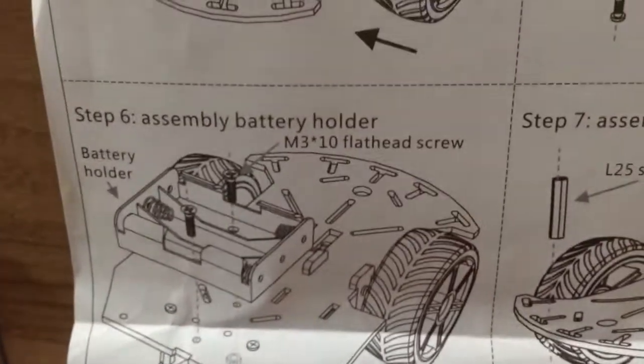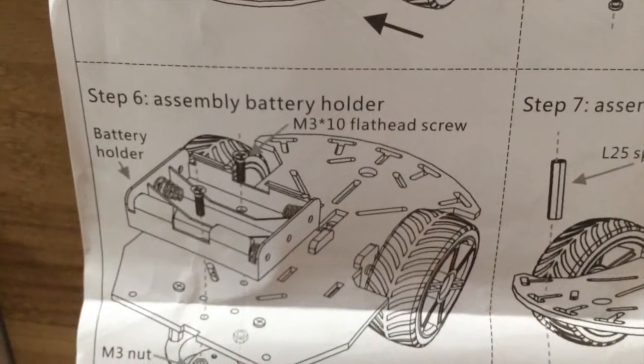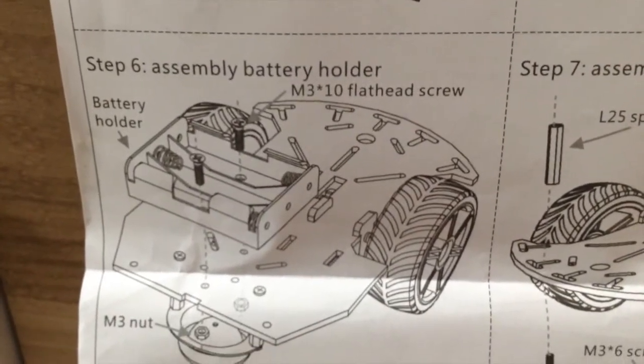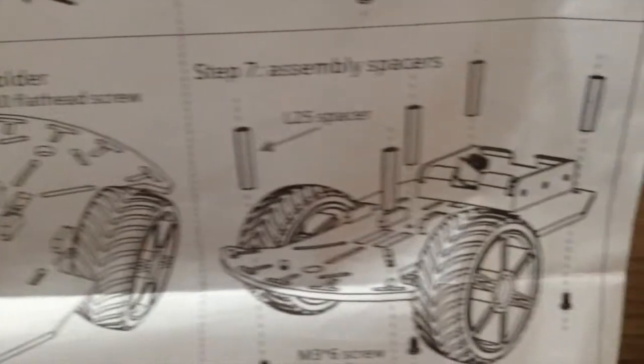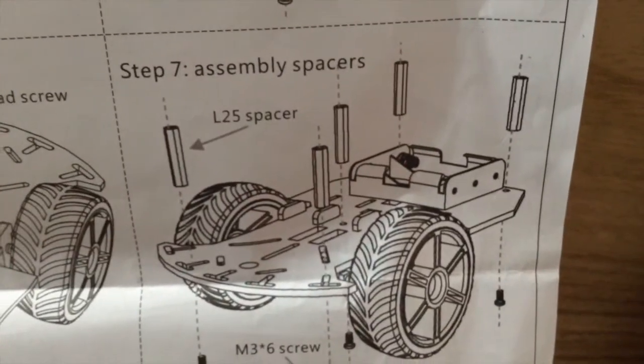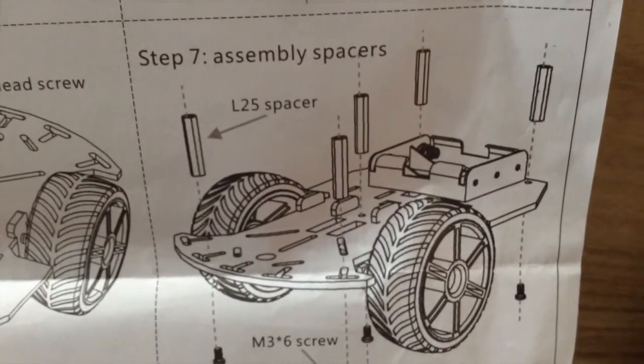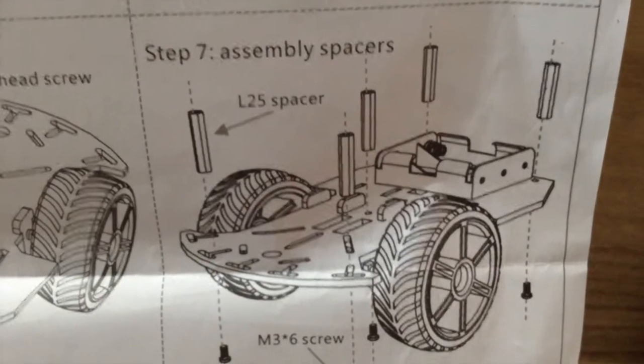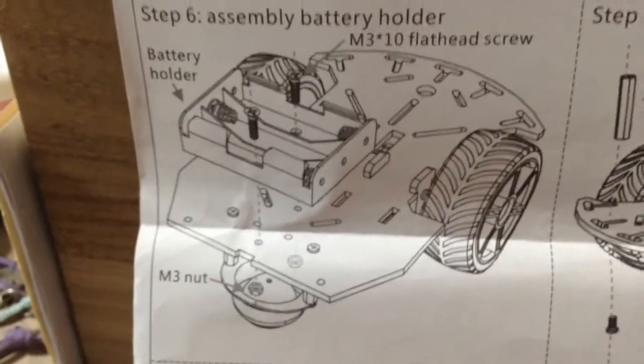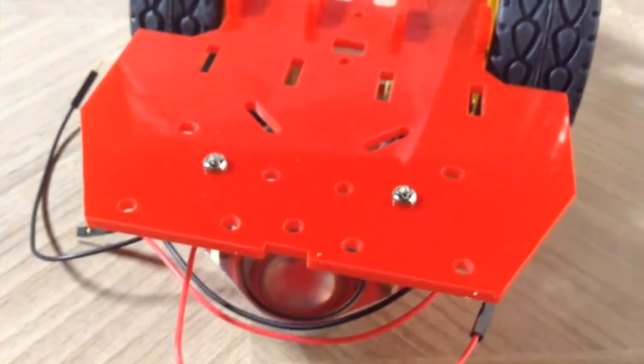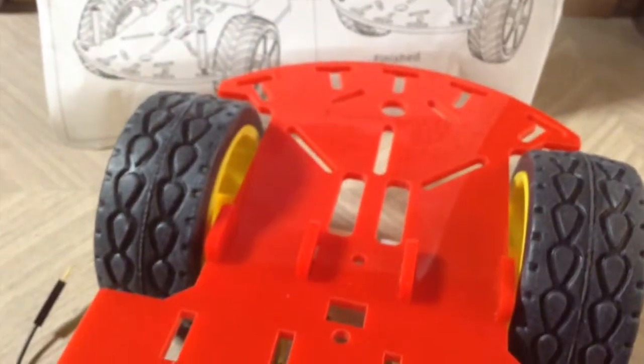So next we're going to do step six and that's assemble the battery holder. And then step seven is to put a bunch of spacers on the same level. So we're working on the top of this chassis. So I'm going to flip it over. Flip it over. So we're going to do our work here to install the battery holder and those spacers.